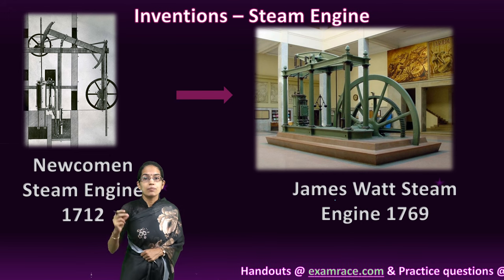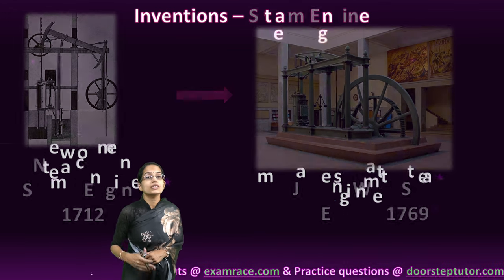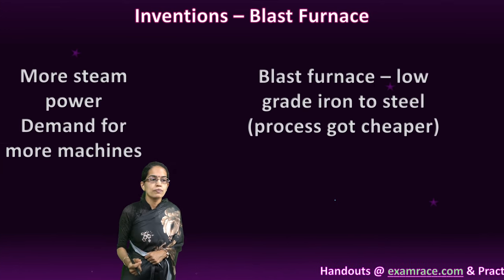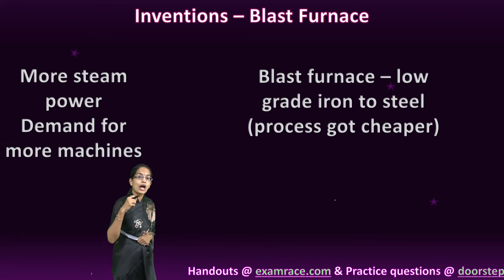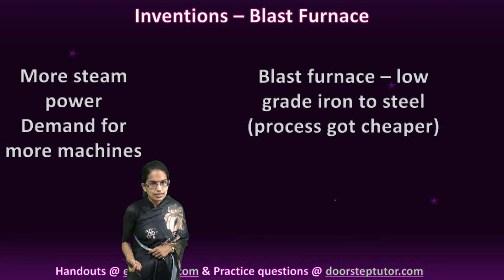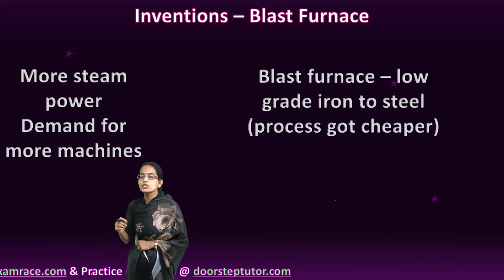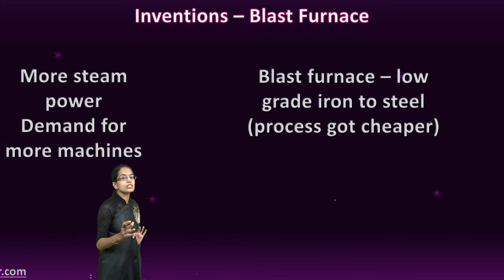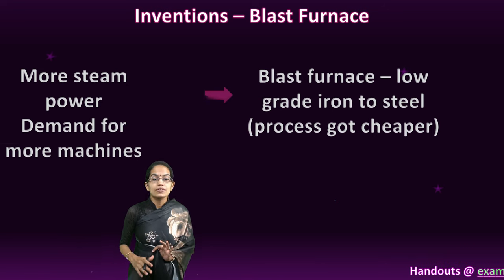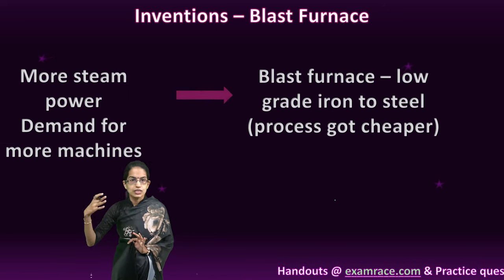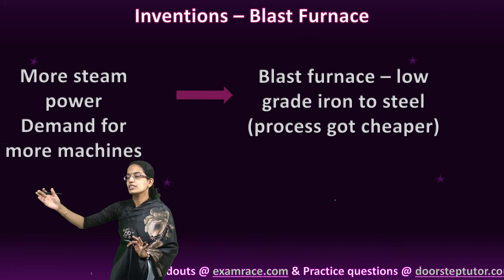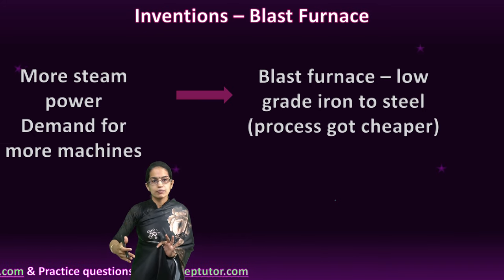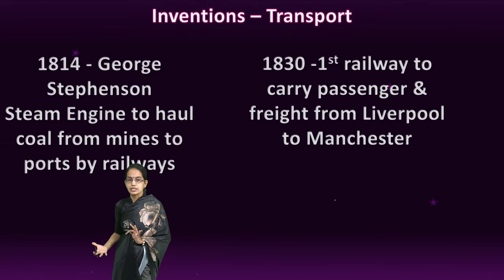With the steam engine, production was jumping, and what was next required was more machines. For more machines with more steam power, what was needed was the blast furnace. The blast furnace could use low-grade iron and convert it into steel, and the process became much cheaper over time. With the blast furnace, numerous industries started to develop further. It was a systematic progression: initially textile developed, then with the steam engine, blast furnace came in, and infrastructure became the basis.